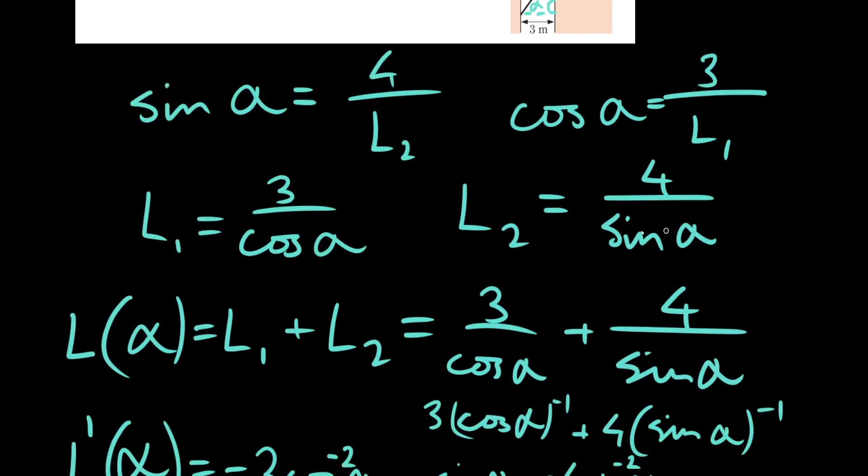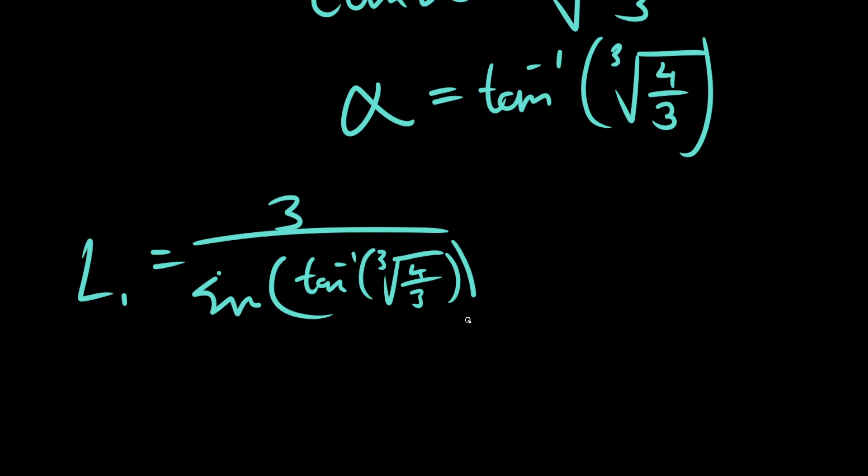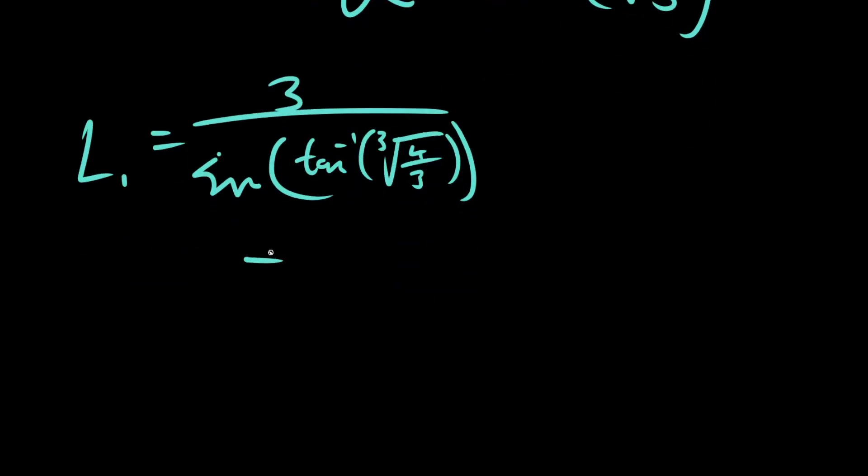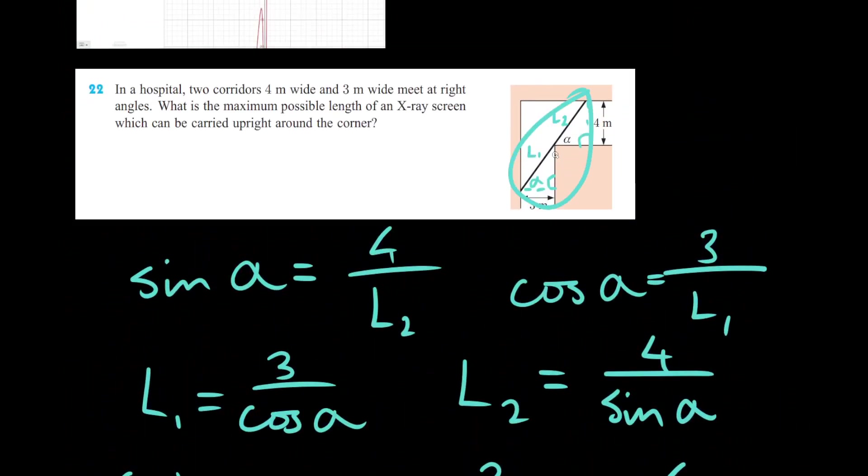So, what we'd have to do is plug it back into our formulas for L1 and L2. Remember, L1 is equal to 3 over cosine alpha. And then we're going to add on plus L2, which is equal to 4 over sine of arctan of the cube root of 4 over 3. And if you add these two numbers together, punch them into your calculator, you should get the maximum value permitted in this corridor.